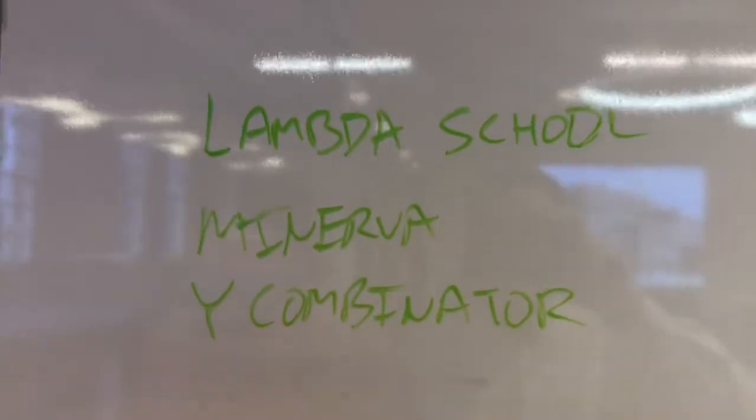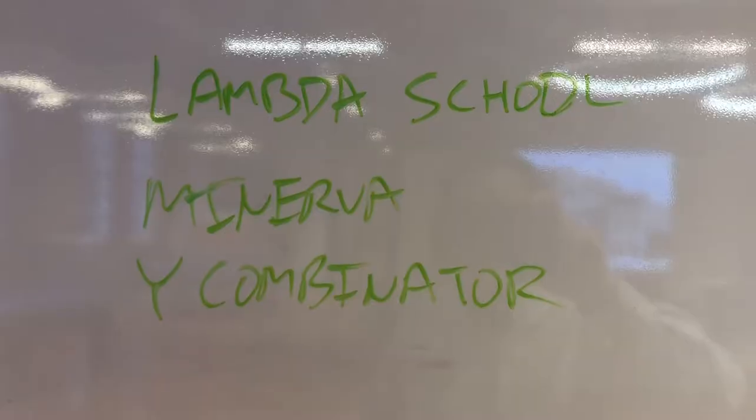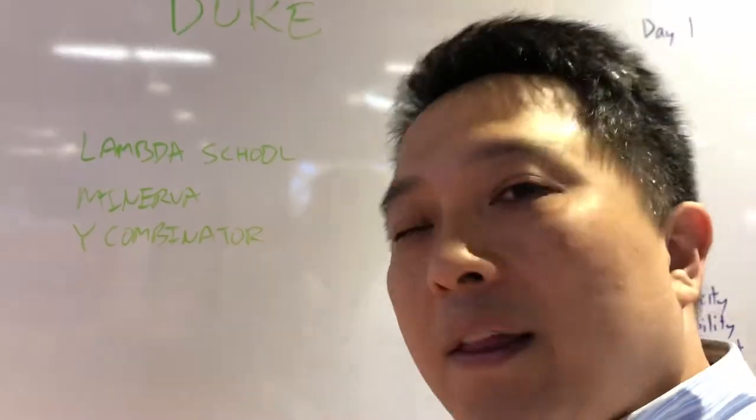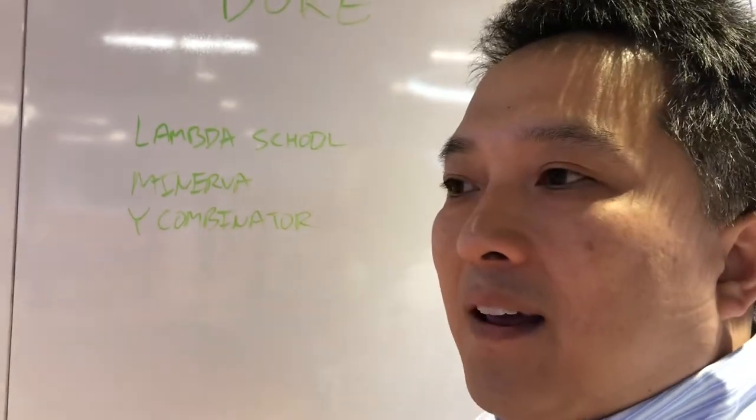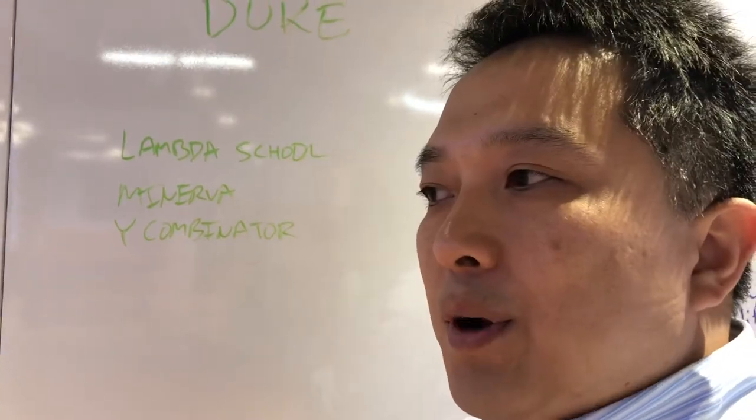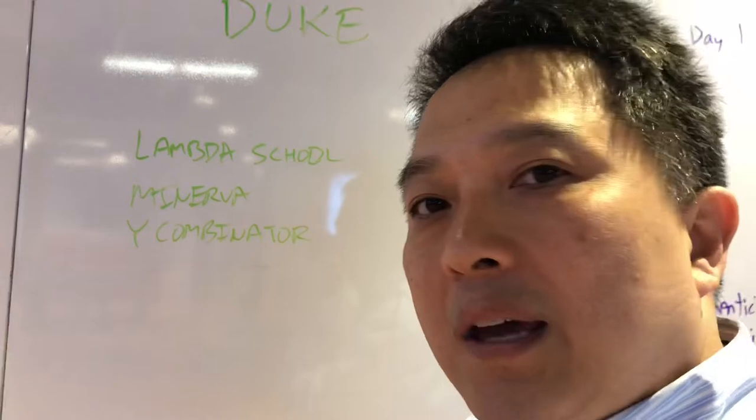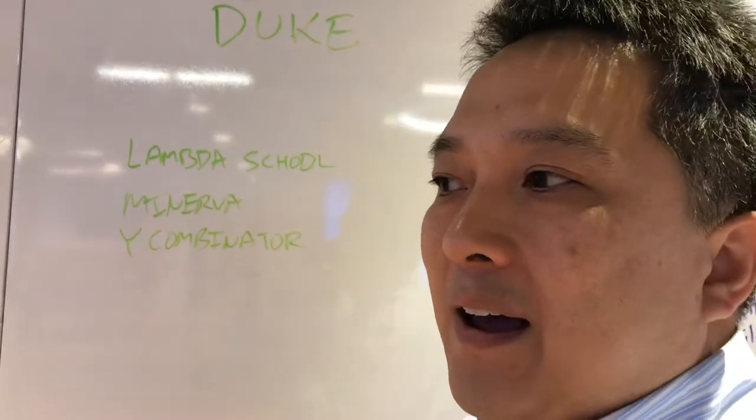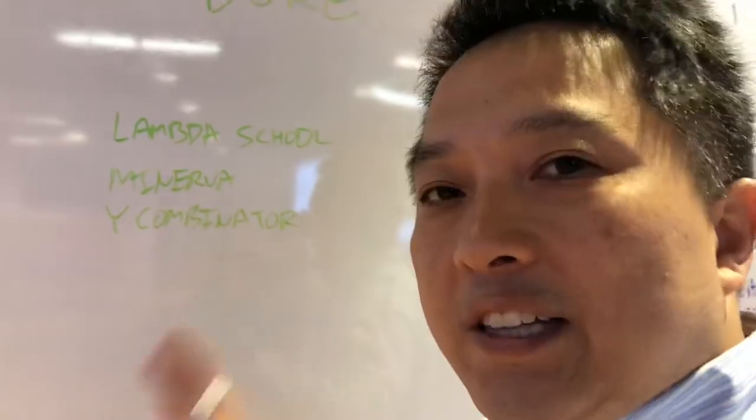I mean, just a few examples here. Some of you are familiar with Lambda School, Minerva and Y Combinator. When I think about these models, I think like, wow, these people are taking really big bets and they're able to maneuver in the way that only startups can, which is that they can make quick choices, turn on a dime, and reallocate resources very quickly. You should check these out.